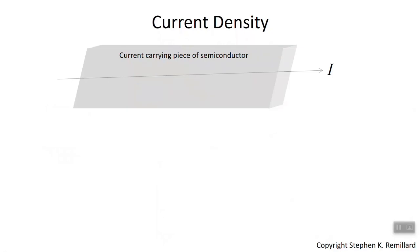From this video, you will understand the microscopic model of electrical drift current, which you can understand as just counting electrons as they pass by. I will guide you through the concept that relates current, voltage, and carrier concentration.